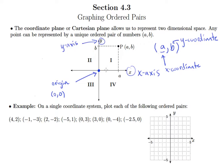One last note about the coordinate plane: there are Roman numerals marking four quadrants. The upper right is quadrant 1, the upper left is quadrant 2, the lower left is quadrant 3, and the lower right is quadrant 4. This is something you'll encounter later in your mathematics career.